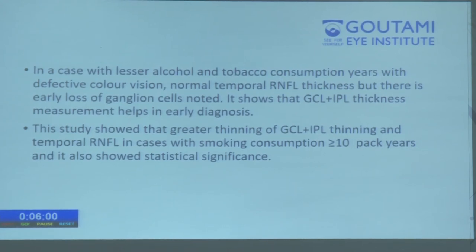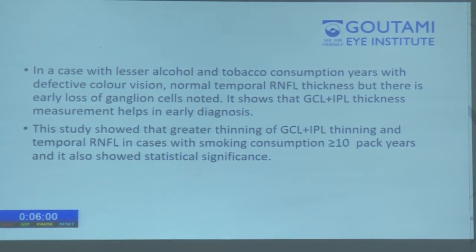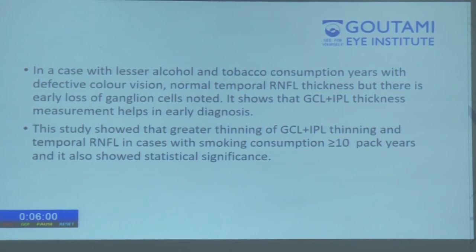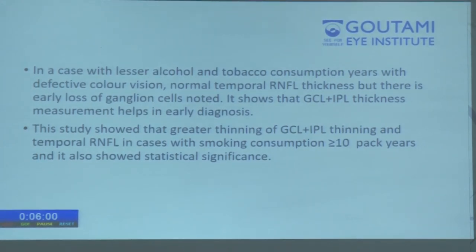In conclusion, there is more loss of GCL+IPL and retinal nerve fiber layer in those consuming more pack years of tobacco and greater quantities of alcohol per year. In alcohol consumers, those drinking local liquors such as Sara and Gudumba showed more loss in GCL+IPL.